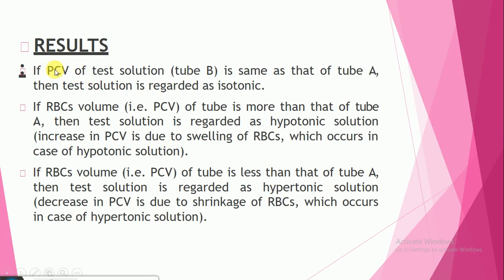These are the results: if the packed cell volume, or hematocrit, of the test solution tube B is the same as that of tube A, then the test solution is regarded as isotonic.